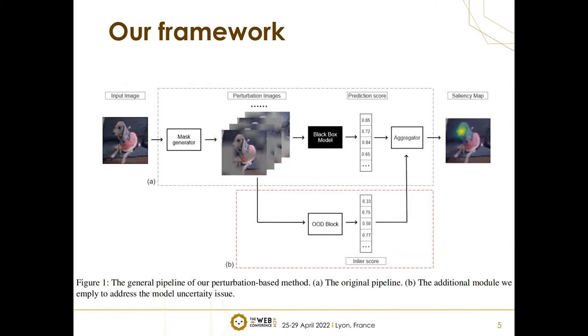To solve the OOD problem, this work proposed a framework to generate robust explanations for perturbation-based XAI methods. Here we take the image classification scenario as an example. Above is the general perturbation-based XAI method framework as shown in A. The original image is fed to a mask generator and mask multiplied element-wise with the mask. This resulting perturbed image is subsequently fed to the model for prediction. The model produces prediction probability for every perturbation image. A saliency map for the original image is created based on the mask and probability score.